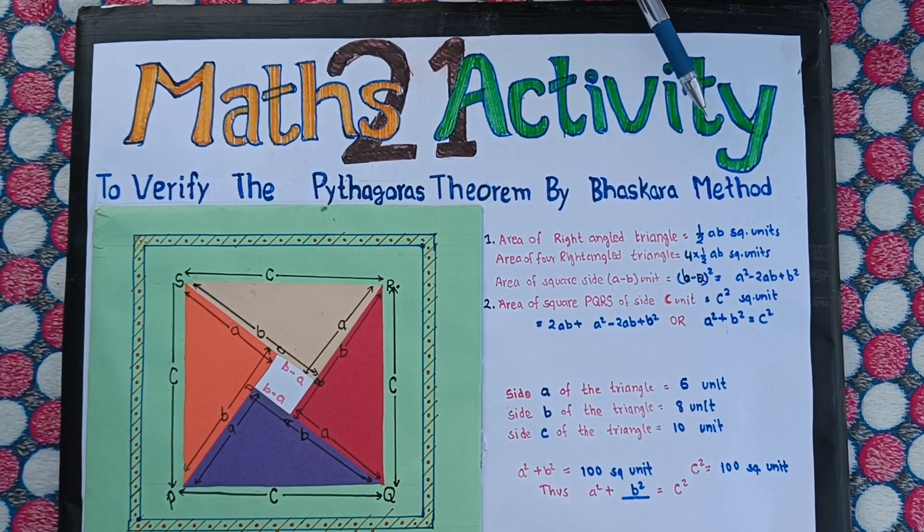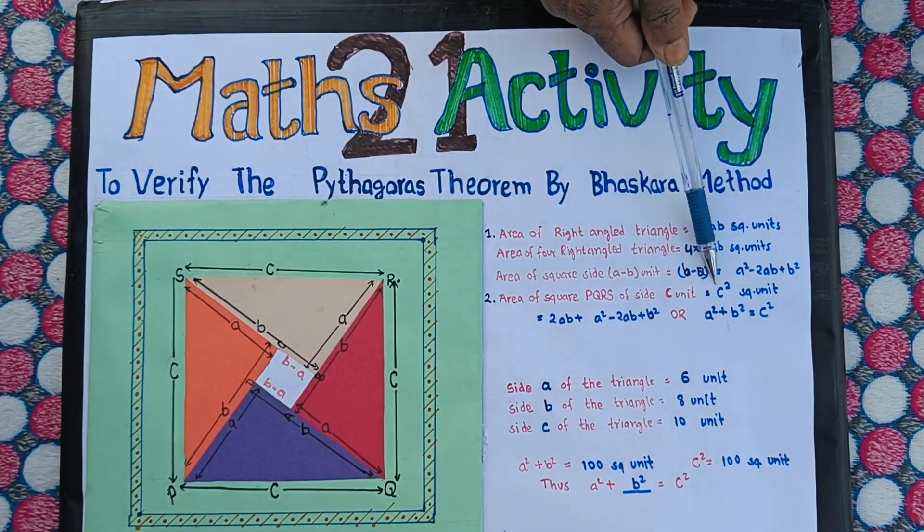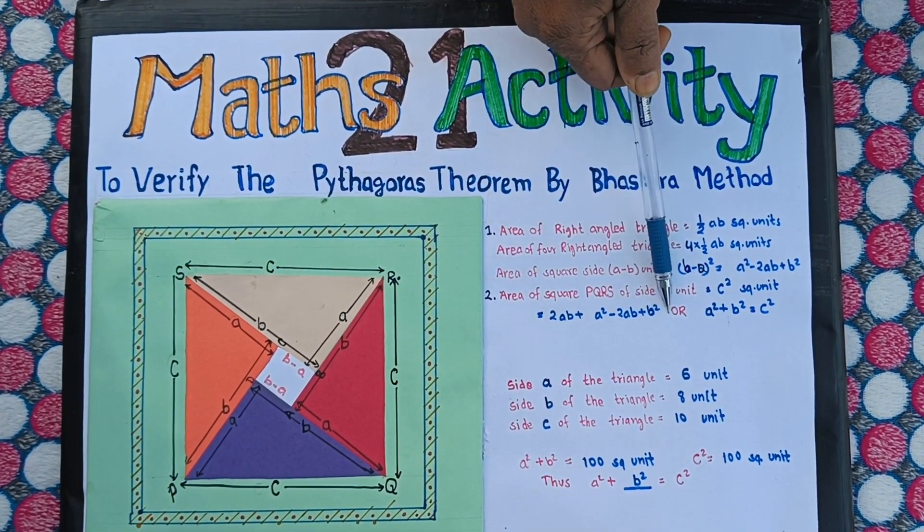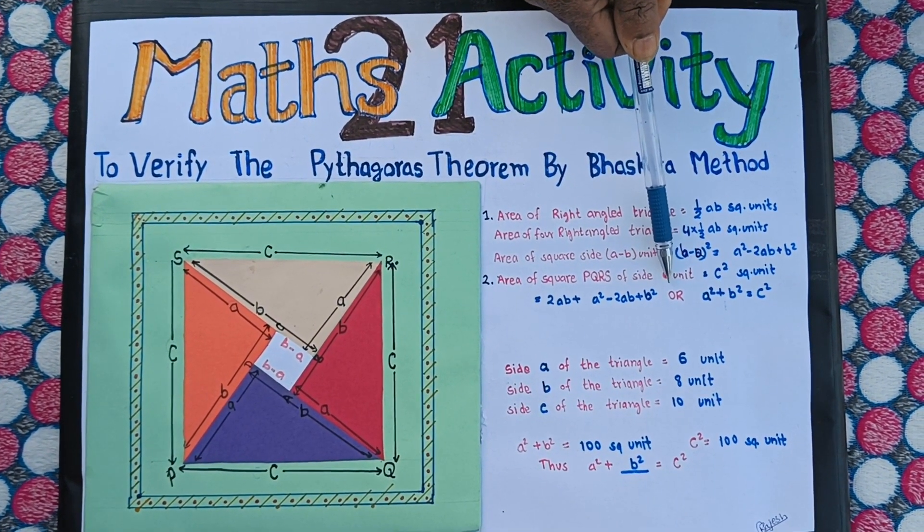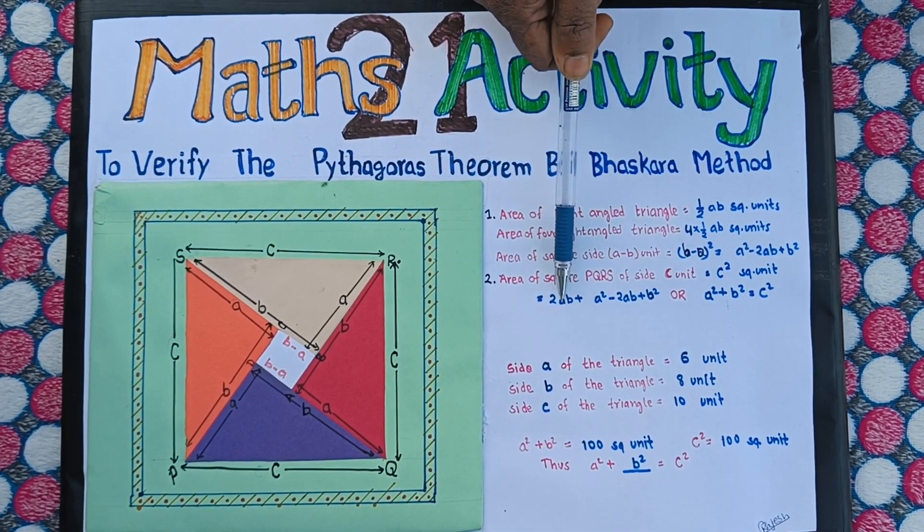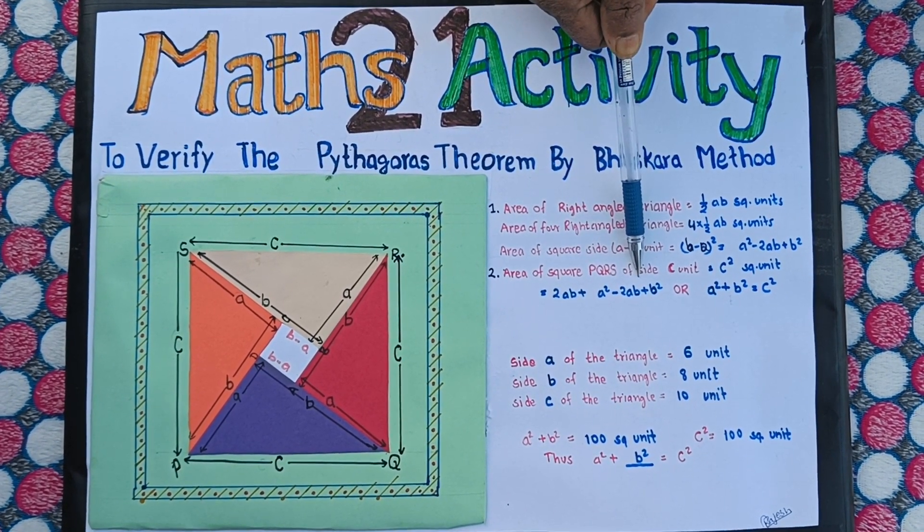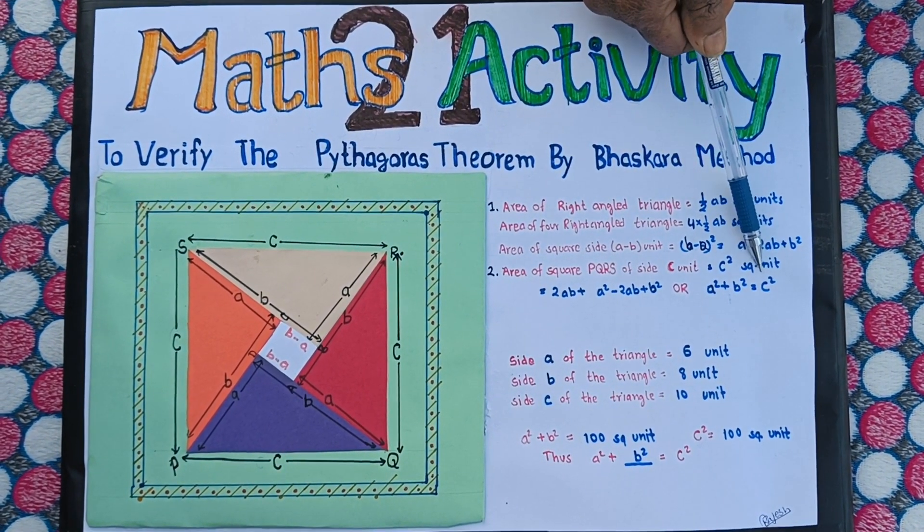Now equating both areas: C square equals 2AB plus A square plus B square minus 2AB. The 2AB terms cancel out. Remaining is A square plus B square equals C square.